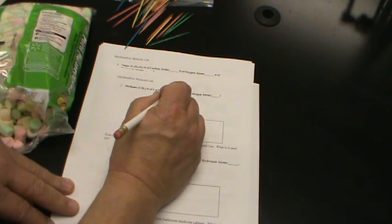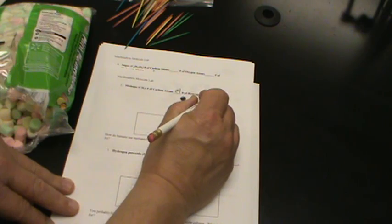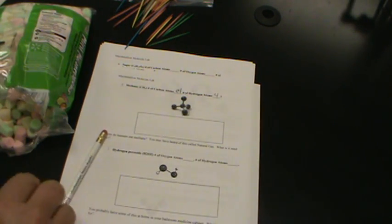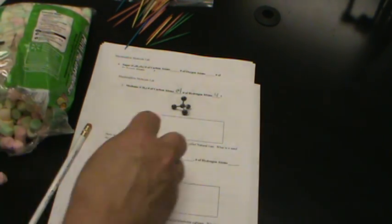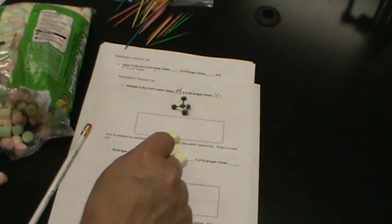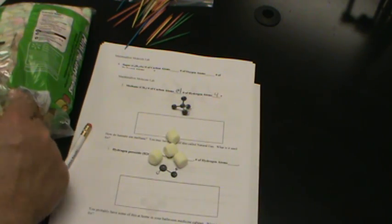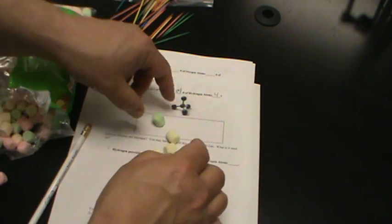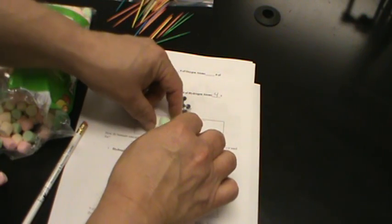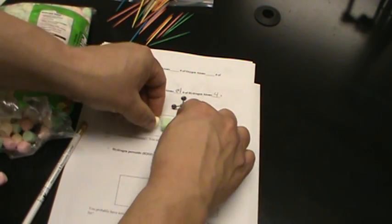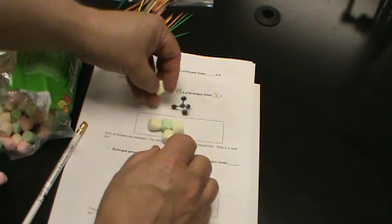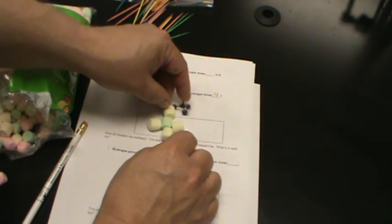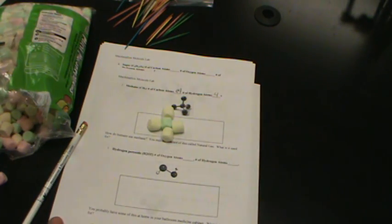Now, flipping the page over, methane CH4. The number of carbon atoms is one and the number of hydrogen atoms is four. Now we've been talking about some of our alkanes, which are our carbon chains, in another laboratory. For this one, if you wanted to do this more or less like it is here, you would probably arrange it without the toothpicks to be something like that. Probably the easiest way to do it.